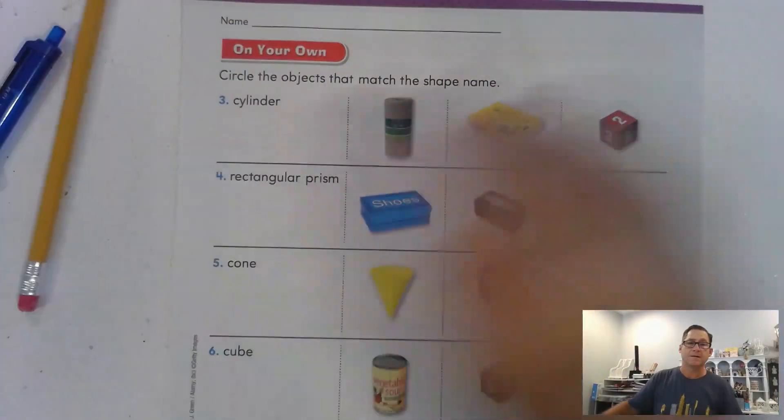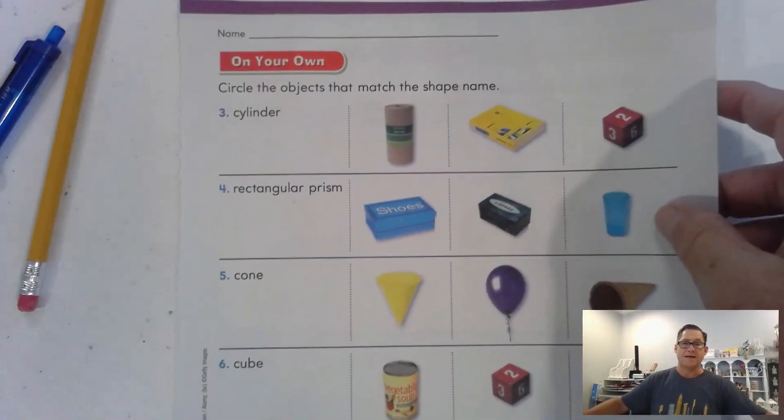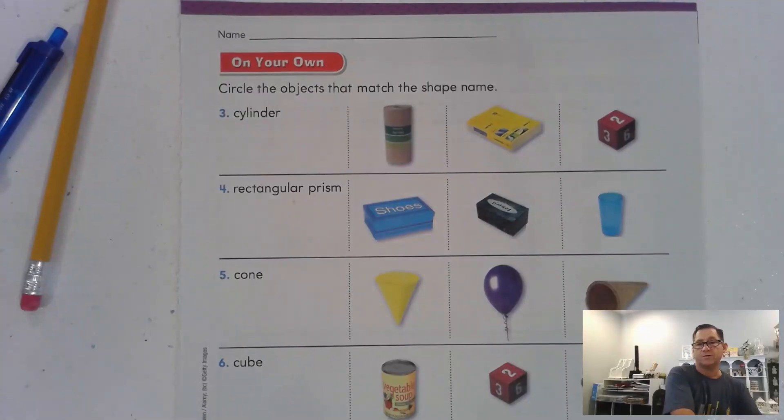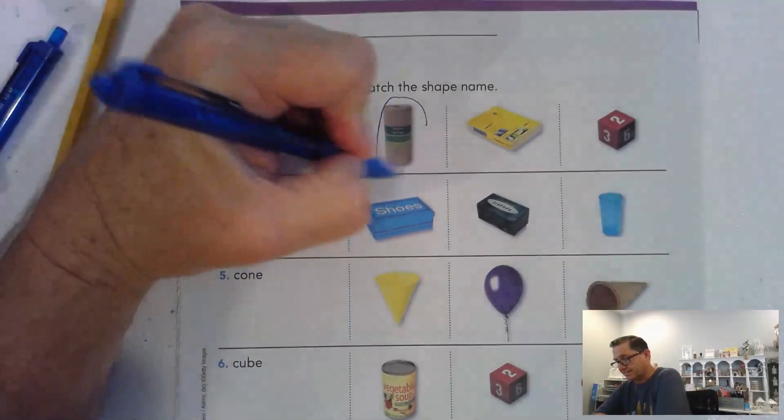Let's look at 523. Circle the objects that match the shape name. Which one of those three shapes is a cylinder? Yeah. It's that shape.